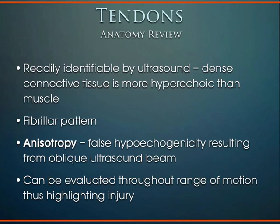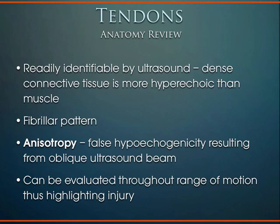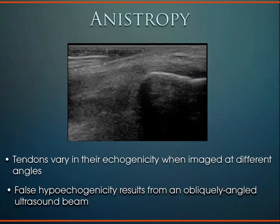As part of knowing what's normal versus abnormal, there's something called anisotropy — when you're looking at tendons, they should have a hyperechoic view with a fibrillar pattern. When looking for problems in tendons, sometimes there's disruption — it appears black or dark — but that might just be anisotropy rather than an actual tear on the tendon. The other nice thing with tendons is that it's dynamic, so you can actually see the tendon move through the whole range of motion.